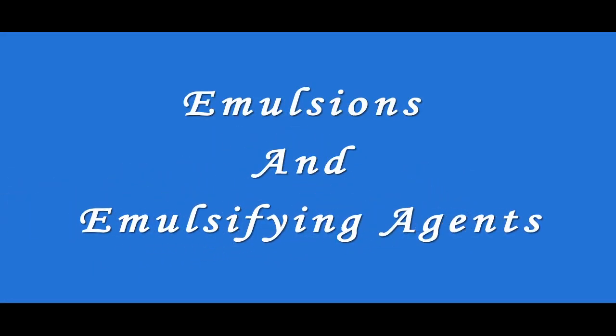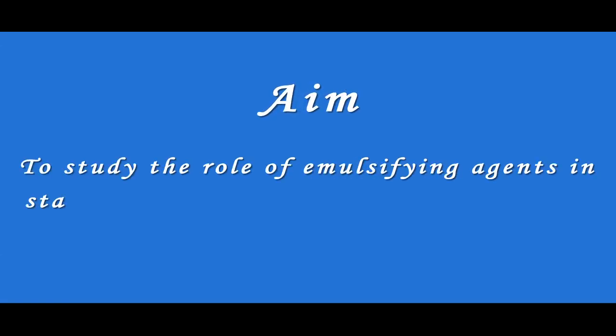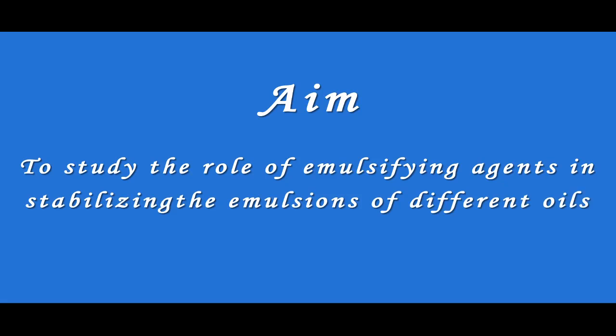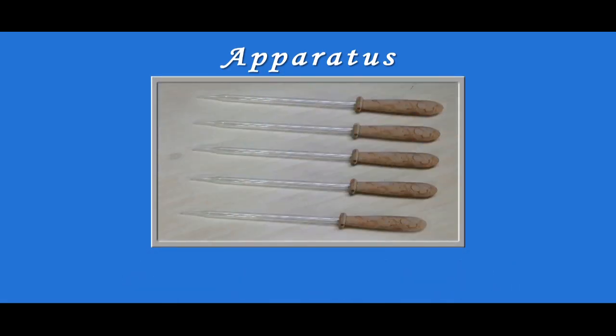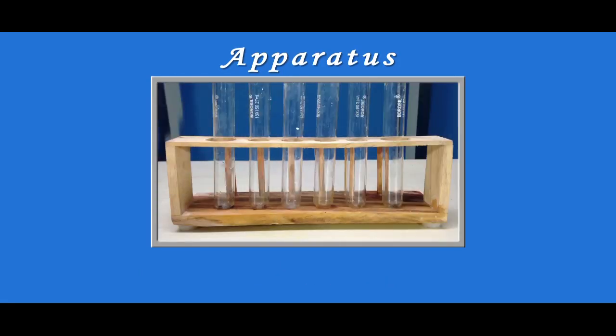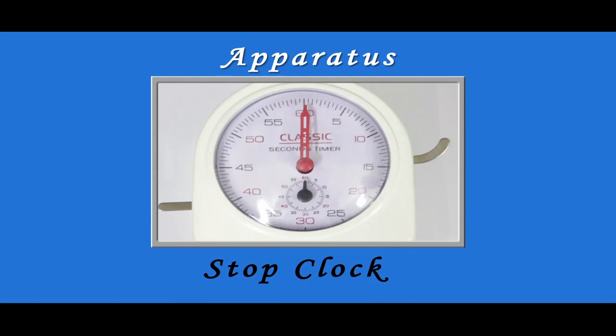Emulsions and Emulsifying Agents. The aim is to study the role of emulsifying agents in stabilizing the emulsions of different oils. Apparatus required to perform this experiment are five test tubes with corks, five droppers, a test tube stand, and a stop clock.